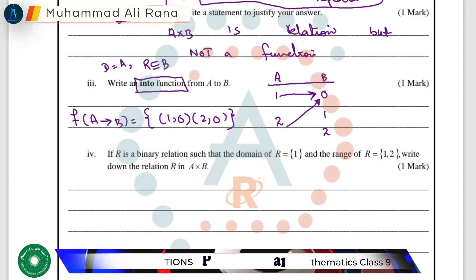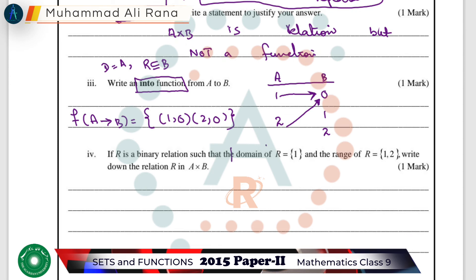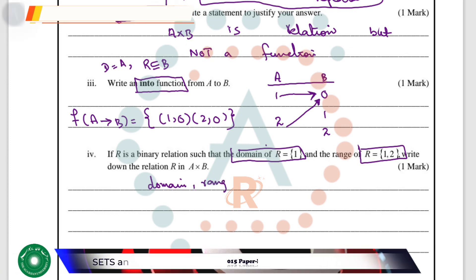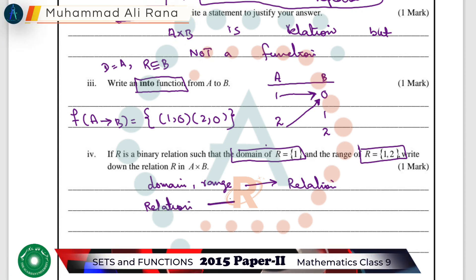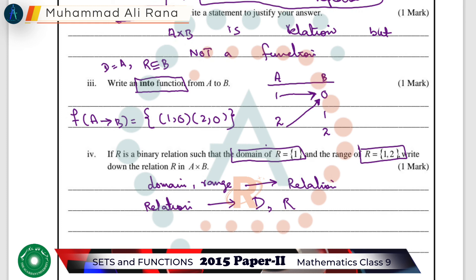Next is part four. If R is a binary relation such that the domain of R equals {1} and the range is {1, 2}, write down the relation R in A cross B. In this question we are given the domain and range of the binary relation, whereas in the previous parts we were finding the domain and range from a given relation. In this part we have to find the binary relation given the domain and range.